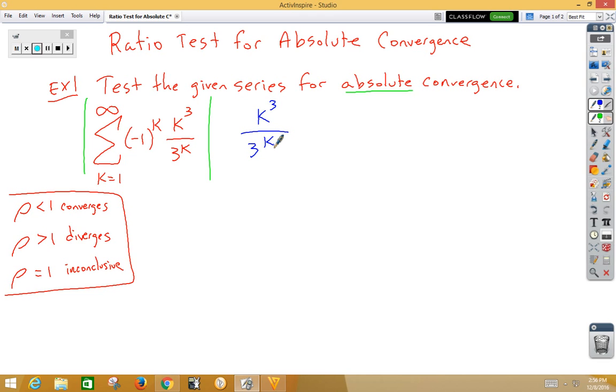So we're going to do the ratio test, so the first thing we need to do is find the next term, so that would be k plus 1 cubed over 3 to the k plus 1, and then we're going to need to multiply by the reciprocal of the original, which would be 3 to the k over k cubed.